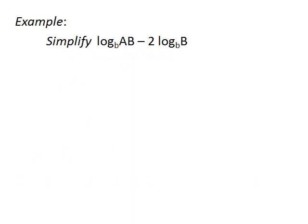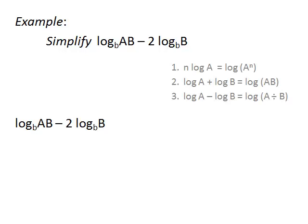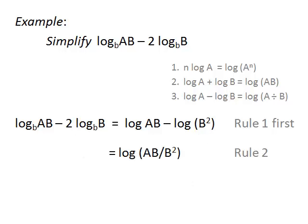Simplify log(ab) minus two log(b), all to some unknown base. We apply rule one first, so the two on the outside becomes a squared on the inside. Then subtracting a log is the same as dividing, so minus log(b²) is the same as dividing by b² inside the log. Then ab over b² simplifies — we cancel a term top and bottom, and we end up with log(a/b). That's our answer.